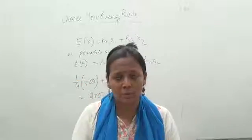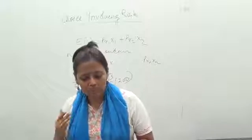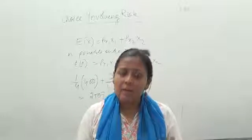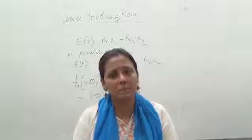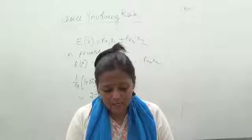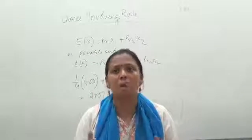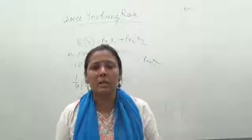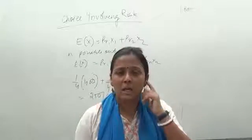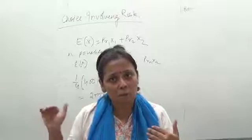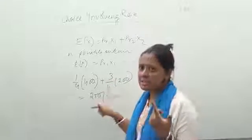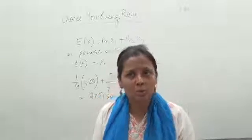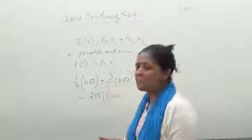We have considered that the sum of probabilities of all events always equals one. Coming back to the oil exploration example, let us assume the probability of success is one-fourth, and with that success the share price is 400 rupees. The probability of failure is then 1 minus 1/4, which is 3/4, and with failure the share price drops to 200 rupees.